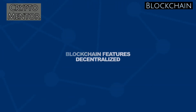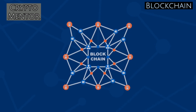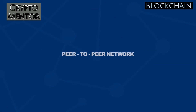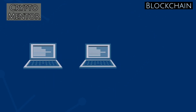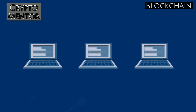Blockchain features: Decentralized — blockchains are decentralized in nature, meaning no single person or group holds authority over the overall network, and no one can modify it by himself. Peer-to-peer network — with the use of blockchain, interaction between two parties through a peer-to-peer model is easily accomplished without the requirement of any third party.